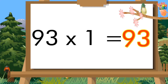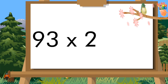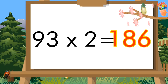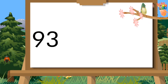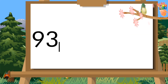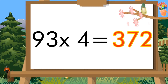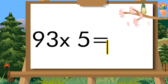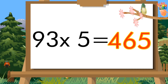Ninety-three ones are ninety-three. Ninety-three twos are one hundred eighty-six. Ninety-three threes are two hundred seventy-nine. Ninety-three fours are three hundred seventy-two. Ninety-three fives are four hundred sixty-five.